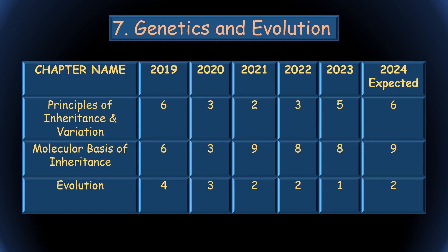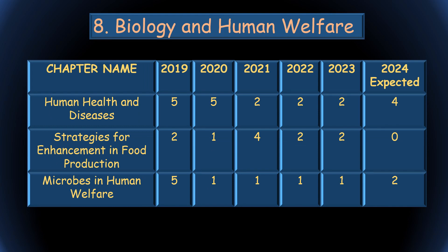Genetics and Evolution involves very conceptual questions. In 2023, five questions came from Principles of Inheritance and Variation; in 2024, six questions are expected because there are fewer chapters. Molecular Basis of Inheritance is another conceptual chapter from which eight or nine questions can be asked. From Evolution, one or two questions can be expected.